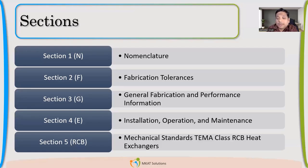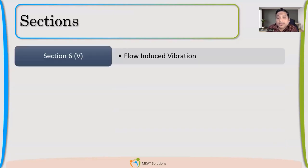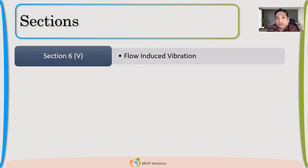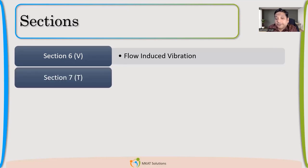Section five is very, very important — all your design-related requirements are mainly found here: shell thickness, minimum shell thickness requirement, tube thickness, baffle thickness, tie rod numbers, and lots of other things. Section six is also very important — it's related to flow-induced vibration. It talks about tube vibration and baffle damage due to vibration. There are four methods used to determine this vibration, including the effect of vortex shedding — everything is given in this section.